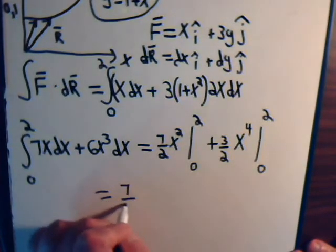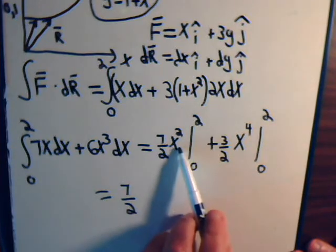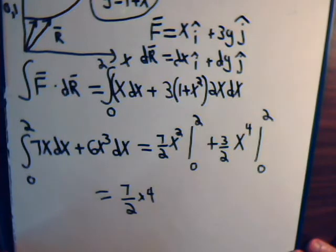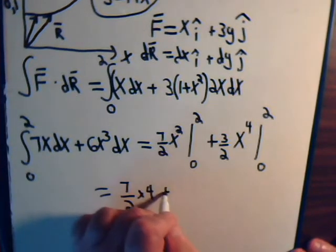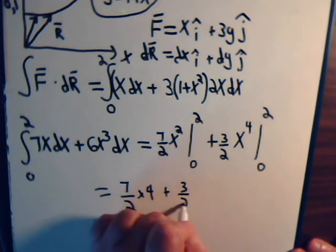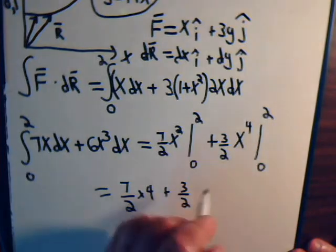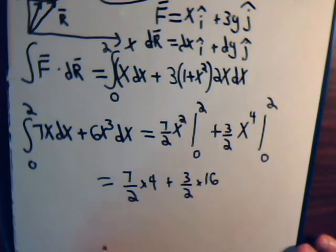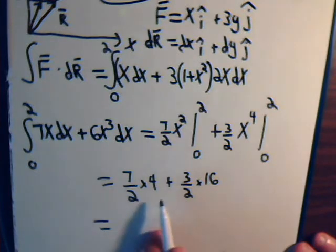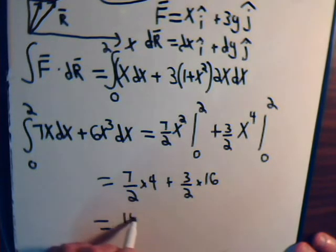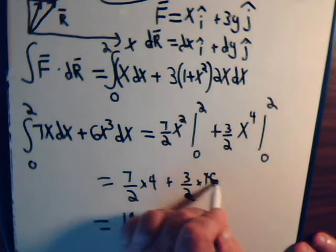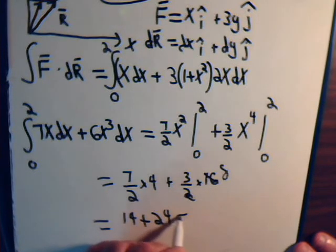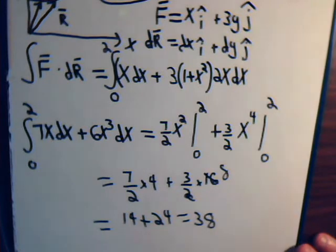So we have 7 over 2. Put 2 in here. 2 squared is 4. Plus, 3 halves. 2 to the 4th is 16. 7 times 2 is 14. Plus, that goes into there, 8. 8 times 3 is 24. Equals 38. So that's it.